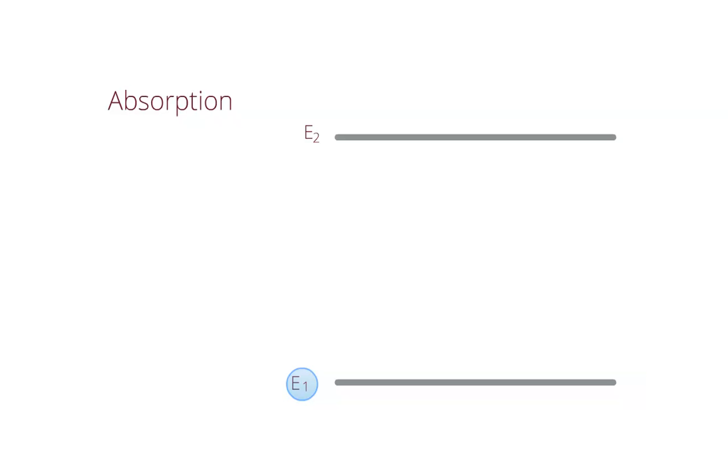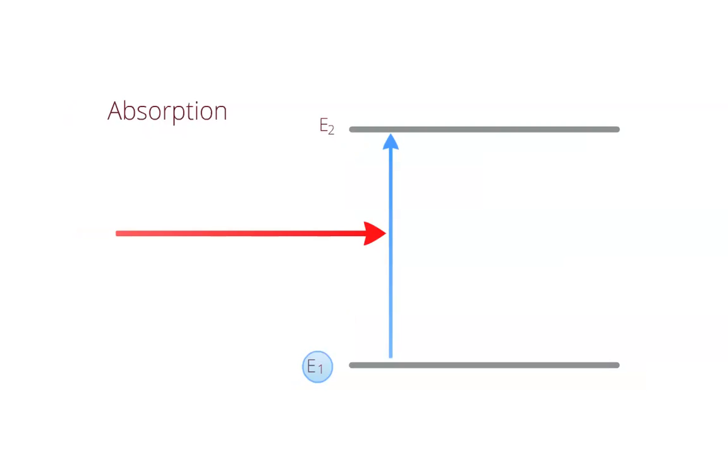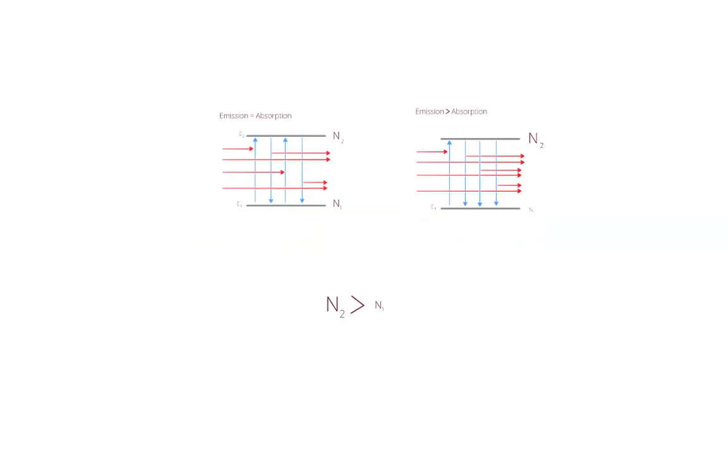However, just as a photon can be emitted, if the atom is in a lower energy state, a photon can be absorbed to raise the energy level. This is problematic because just as stimulated emission amplifies the beam, absorption will attenuate the beam. So to amplify the beam and achieve lasing, we must have more stimulated emission than absorption.